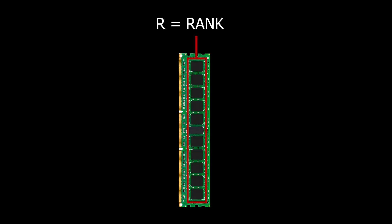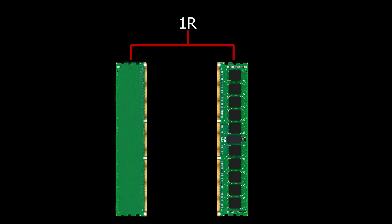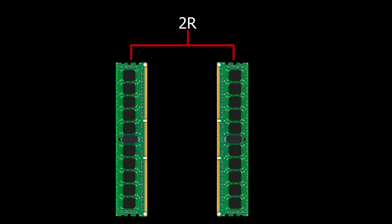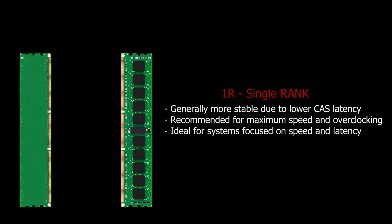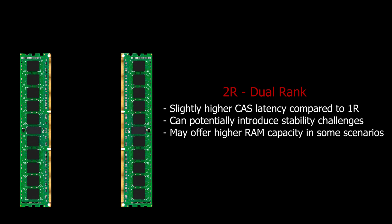Then we have the terms 1R and 2R, which represent rank. A RAM stick has two sides — 1R means only one side of the stick has memory chips, while 2R means both sides contain memory chips. Having chips on just one side is less demanding for the memory controller, resulting in lower CAS latency and higher frequency potential, while having chips on both sides relates to increased RAM capacity. But if you're aiming for speed and less latency while maintaining the same RAM capacity, a single rank stick will be your best choice.